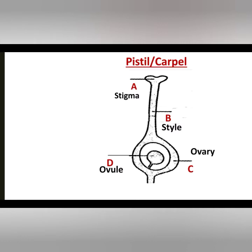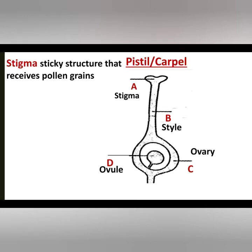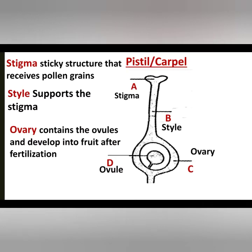Now let's quickly move to the functions of the various parts. The stigma is a sticky structure that receives pollen grains. The style supports the stigma. The ovary is the structure that contains the ovules and develops into fruits after fertilization. And lastly, the ovule produces the female sex cell. Combining this, the pistil is there to produce the female sex cell.